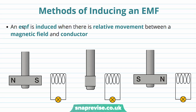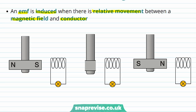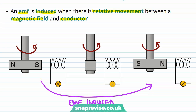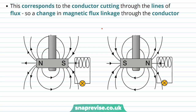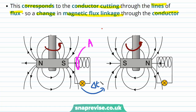We're going to look at different methods of inducing an electromotive force or EMF. An EMF is induced when there is relative movement between a magnetic field and a conductor. For example, in the case of a dynamo, a magnet rotating causes an EMF to be induced in an external circuit. This corresponds to the conductor cutting through the lines of flux, so a change of magnetic flux linkage through the conductor. As the magnet rotates, the flux through a certain area A of the conducting coil changes as time passes, and therefore there is a changing magnetic flux over time.